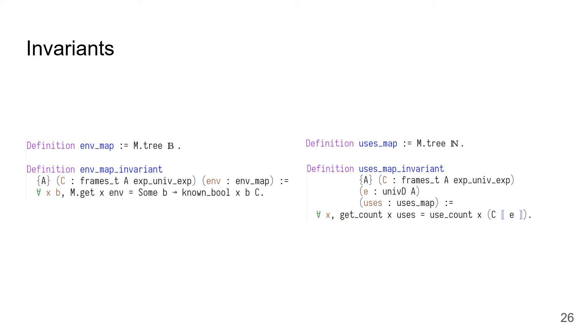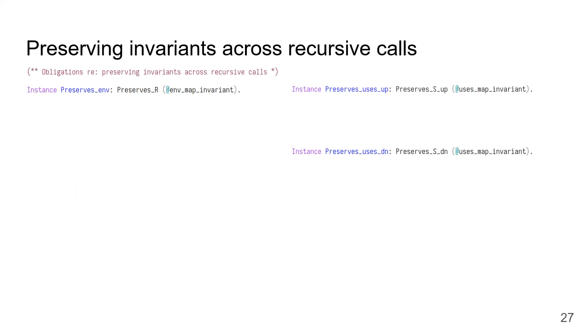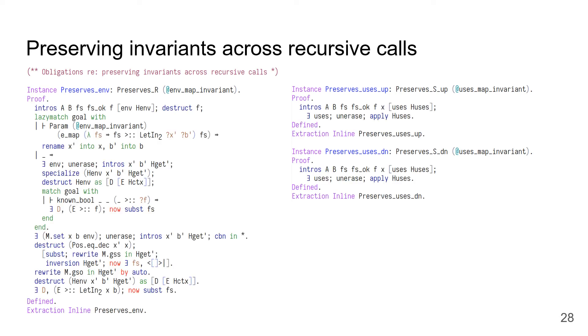And a uses map mapping variable names to natural numbers, with the invariant that getting a use count from the uses map gives back the number of times that variable is used in the expression being optimized. In order to actually use these helper data structures, our tool demands that the user prove the following three theorems, which basically explain to the tool how the invariants on the user's helper data structures can be maintained at each recursive call. In this case, here is what the proofs of these three theorems look like.